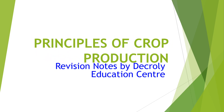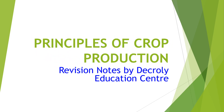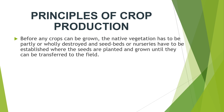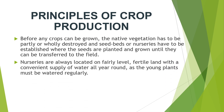Before any crops can be grown, the native vegetation has to be partly or wholly destroyed and seed beds or nurseries have to be established where the seeds are planted and grown until they can be transferred to the field. Nurseries are always located on fairly level, fertile land with a convenient supply of water all year round, as the young plants must be watered regularly.